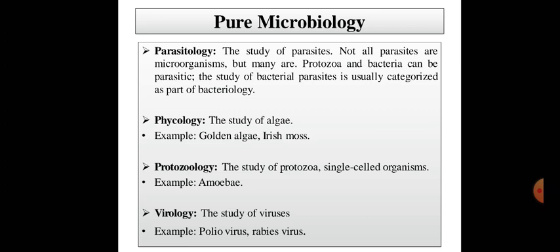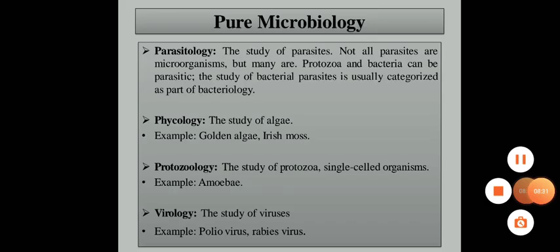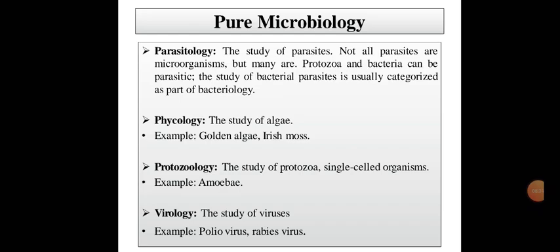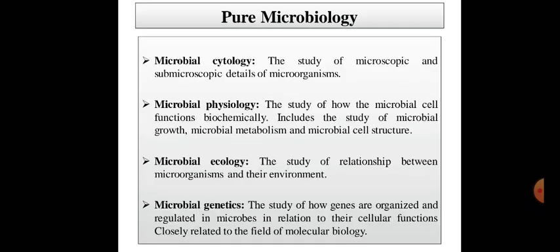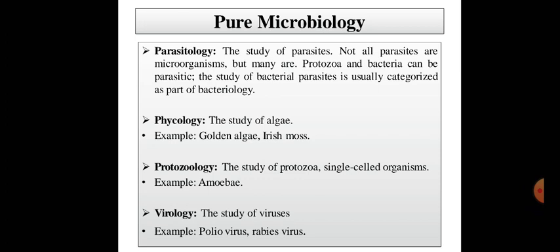The next branch is phycology — the study of algae. Examples include golden algae and Irish moss. Protozoology is the study of protozoa, single-celled organisms; an example is amoeba. The next branch is virology — the study of viruses. Examples include poliovirus and rabies virus.